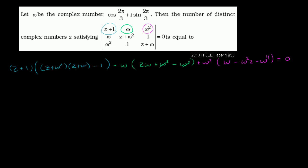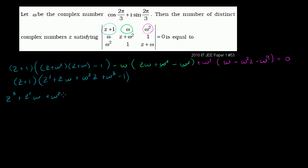Let's multiply out the two factors in the first term. z times z is z², z times ω is zω, ω² times z is ω²z, and ω² times ω is ω³. Then there's a minus 1, all multiplied by z+1. Expanding: z³ + z²ω + ω²z² + ω³z − z, from multiplying z through. Then plus 1 times all of that: z² + zω + ω²z + ω³ − 1.